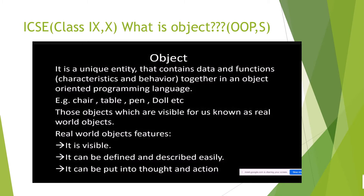Object oriented programming is about objects only — a program is divided into a number of objects, which makes a complex problem into a simpler one. Real world examples include chair, table, pen, doll, etc. These are objects which are visible to us, known as real world objects. They are visible, can be defined, described easily, and can be put into thought and action.